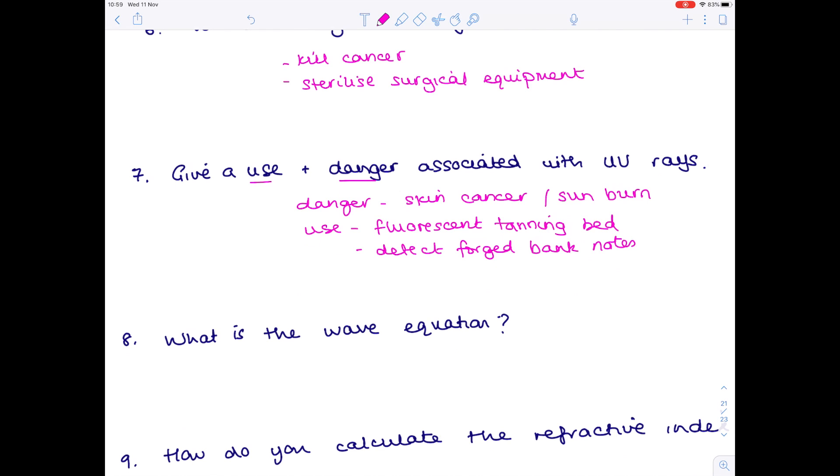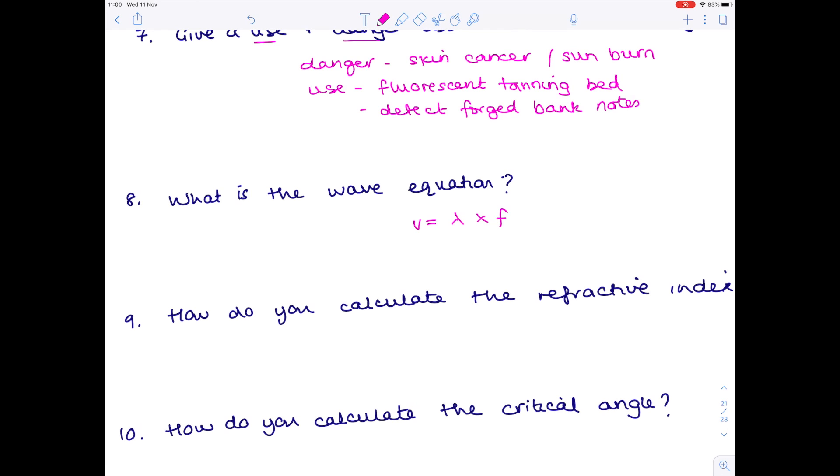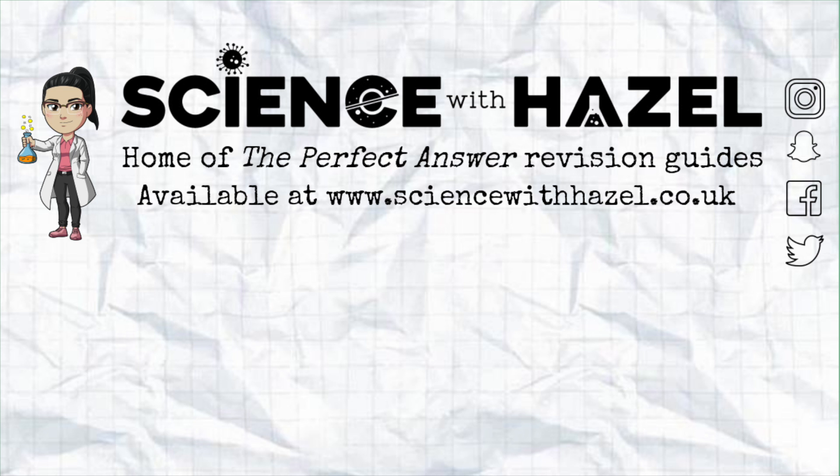What is the wave equation? Wave speed equals wavelength times frequency. How do you calculate the refractive index? Refractive index, given by n, equals sin i over sin r. If you need more detail, go watch my all-in-one revision videos. Finally, question 10: how do you calculate the critical angle? It's sin c equals one over the refractive index.